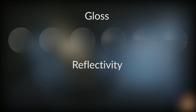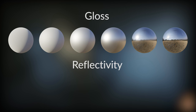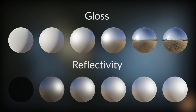It's easy to confuse the terms gloss and reflectivity, because the higher gloss something is, the more reflective it appears. So instead, think of reflectivity as the amount of light being bounced back instead of being absorbed. Gloss or roughness do have to do with how fuzzy the reflections may be, but they don't actually affect how much gets reflected in the first place.